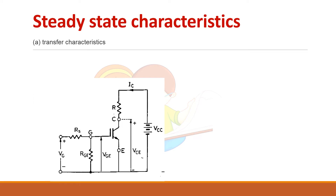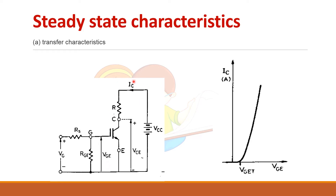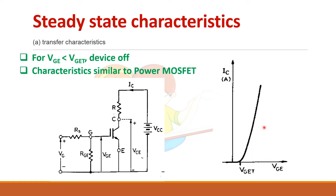The steady-state characteristics of IGBT include the transfer characteristics, which combine input and output parameters. The input parameter is the gate-emitter voltage and the output parameter is the collector current. As you increase the gate voltage up to the threshold value, there will be no collector current. Once it exceeds the threshold value, current increases. These input characteristics are similar to that of a MOSFET.